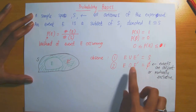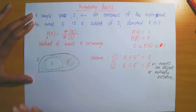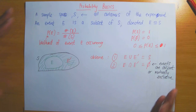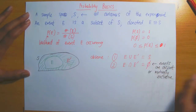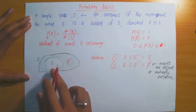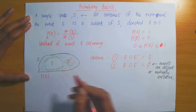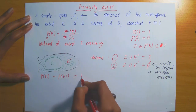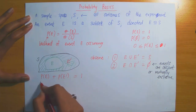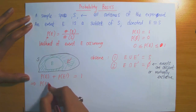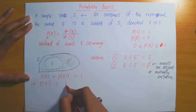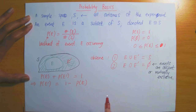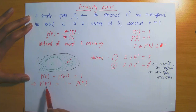Based on this diagram, since E and E complement are disjoint and their union gives the entire sample space S, we observe that the probability of E plus the probability of E prime equals 1. Therefore, the probability of the complement of E equals 1 minus the probability of E. So if you know P(E), you can compute P(E complement) by taking 1 minus P(E).